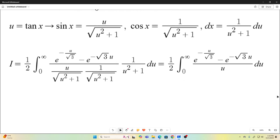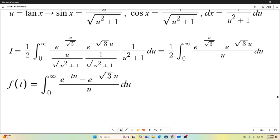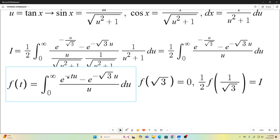Now comes time for our reparameterization. We're going to let f of t be equal to this integral. I got rid of the one half because we don't need it right now, and I replaced negative u over square root of 3 with negative tu. Using that reparameterization, if we evaluate our function at square root of 3, we get 0, because if t is square root of 3, we have 0 on the top, so the entire integral goes to 0.